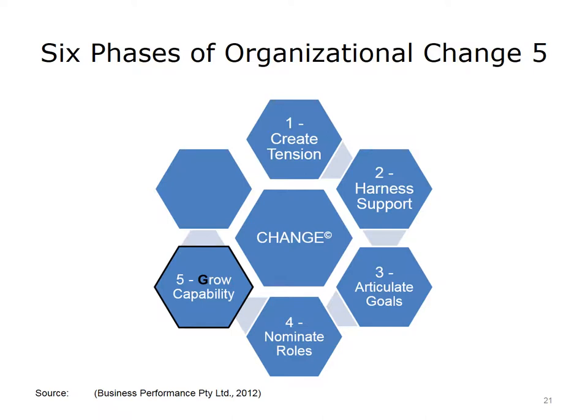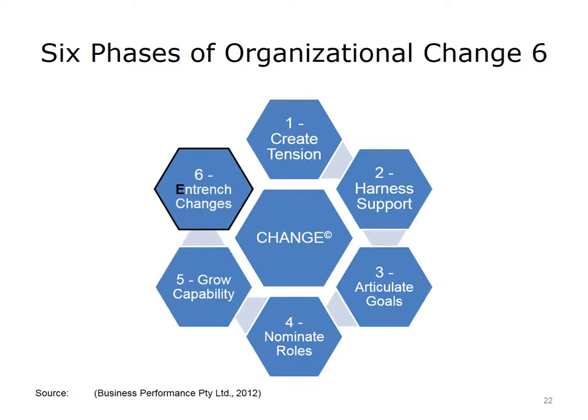Growing capability is the fifth phase. This means that the necessary training for those responsible for the change is in place. The sixth phase occurs when we institutionalize or entrench changes — clearly stating this is the way we do things around here. The additional supportive processes that accompany the specific IT change should now be in place, and what was once the new way of doing things becomes just the normal way of doing things.